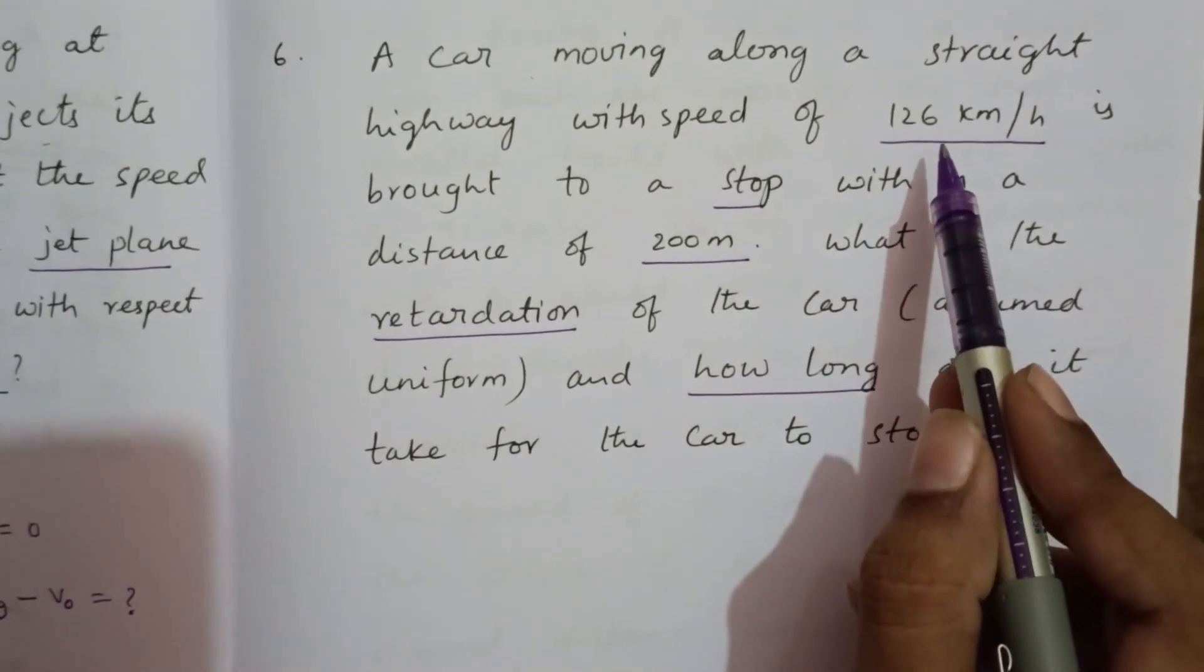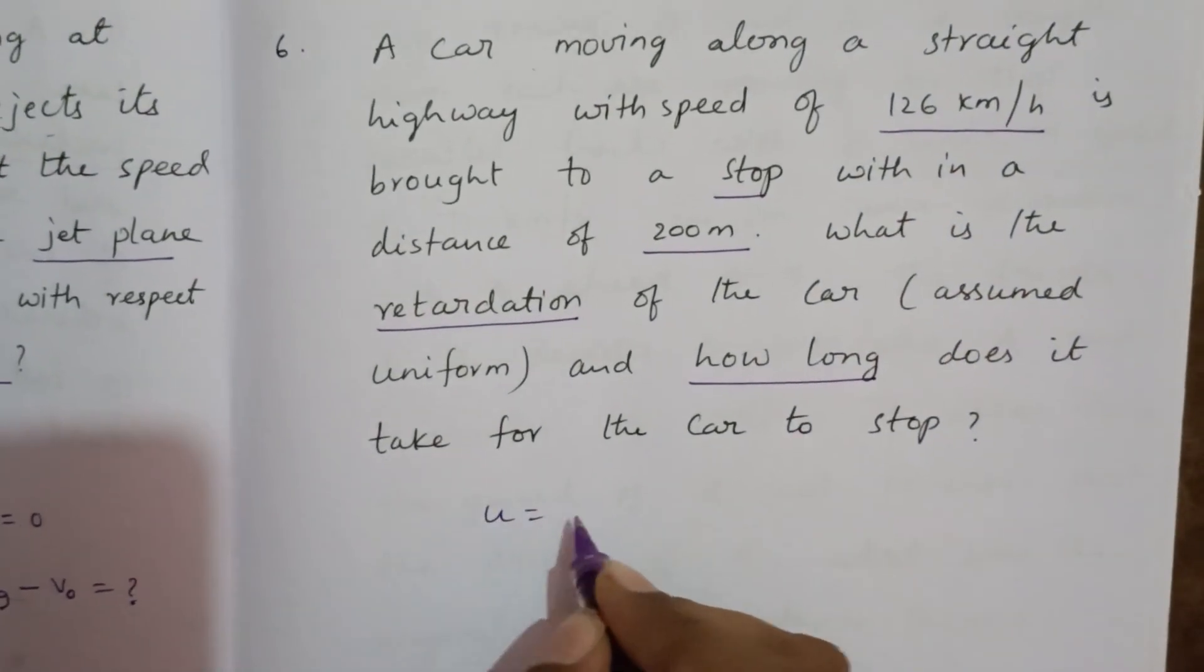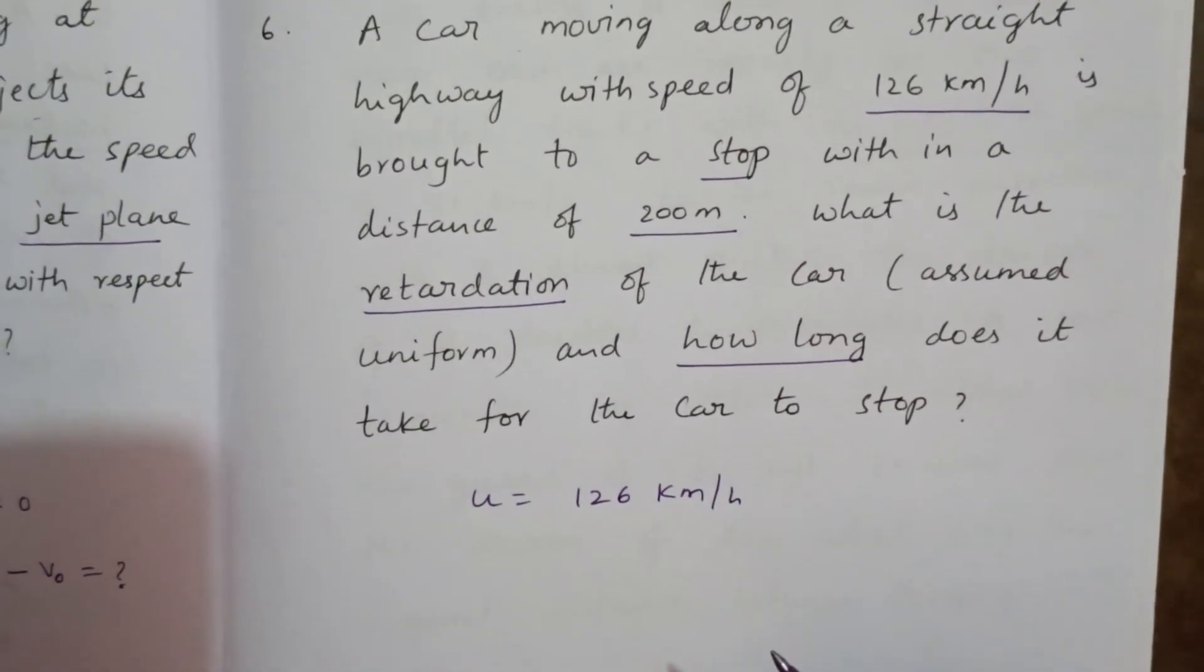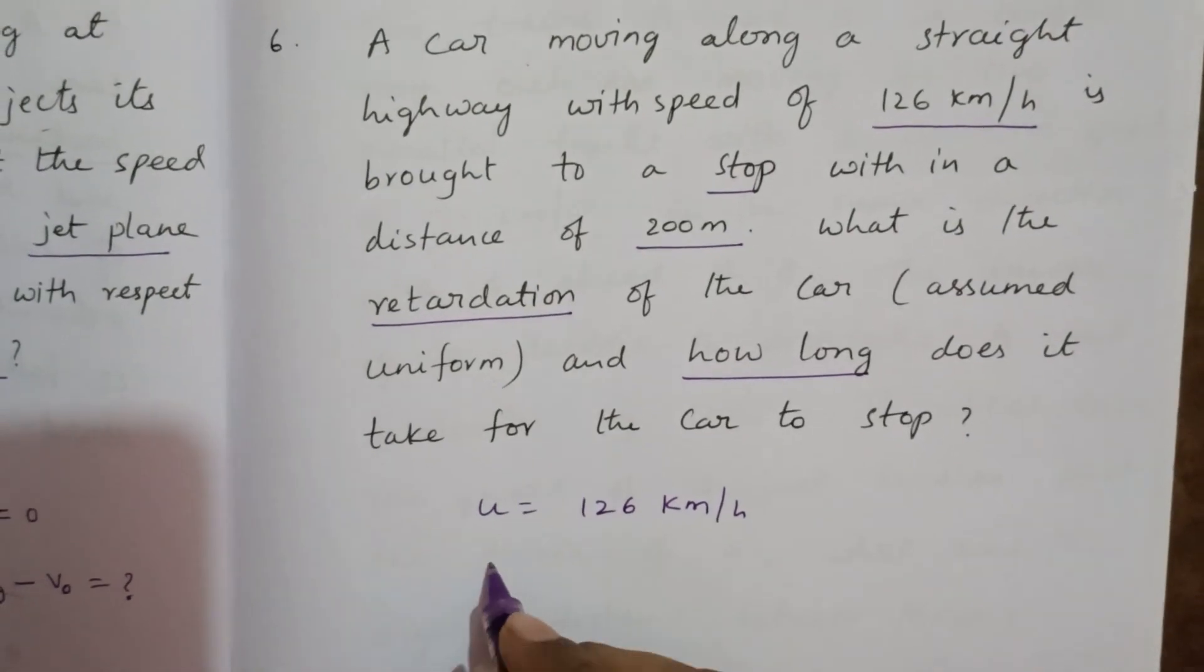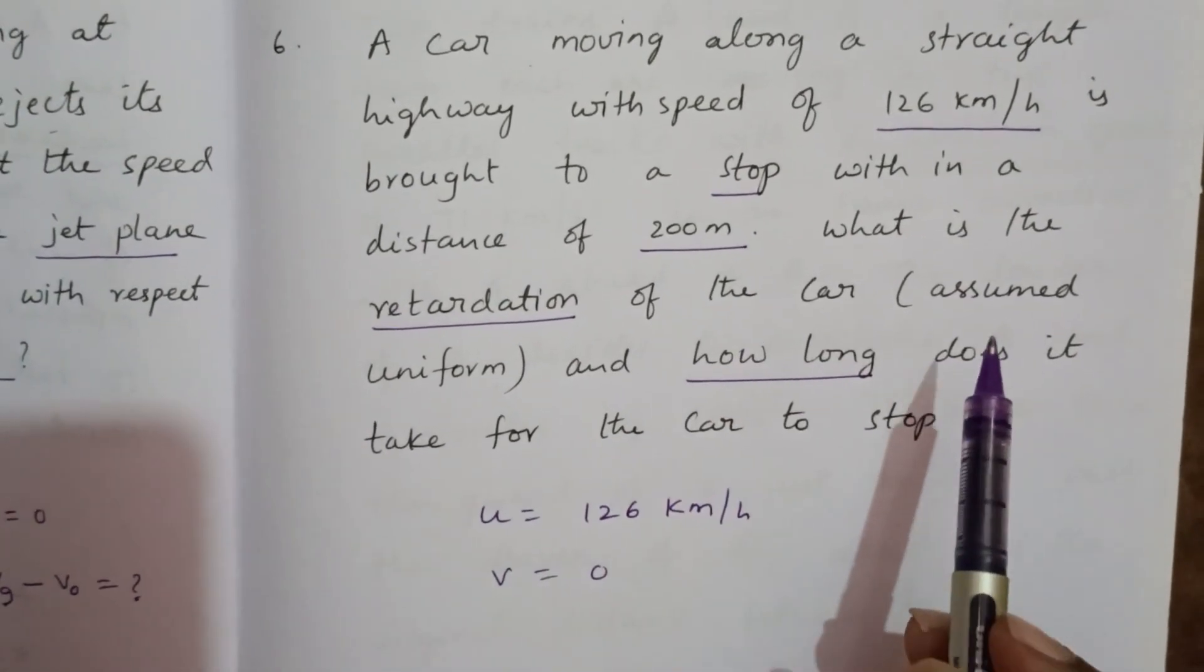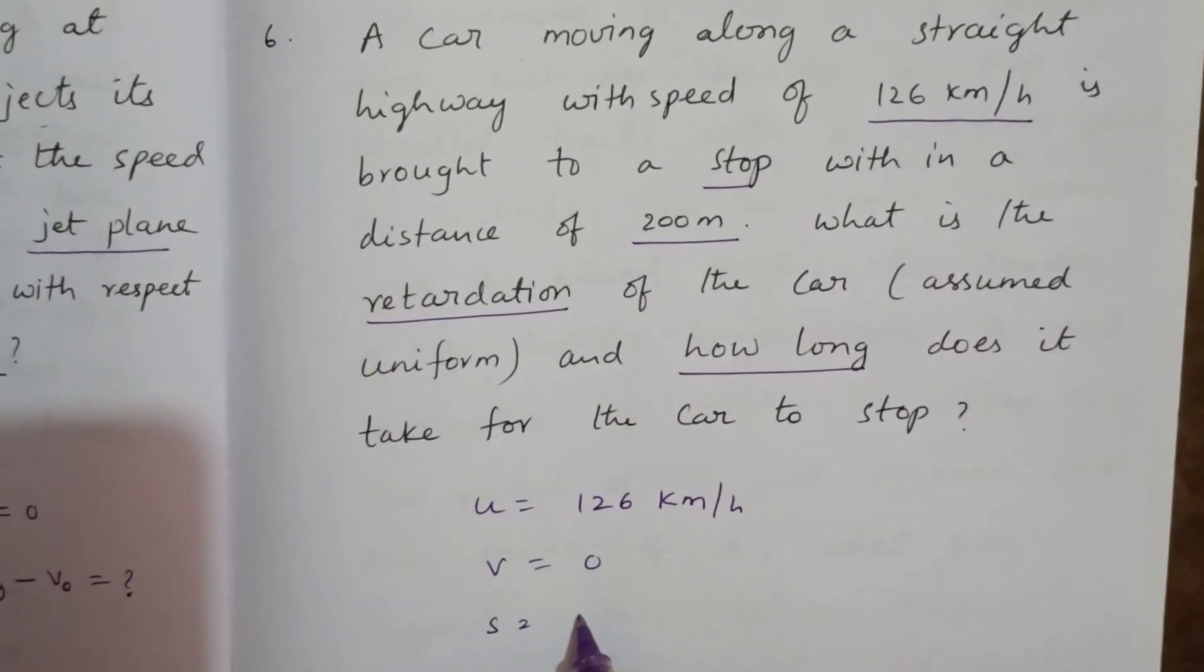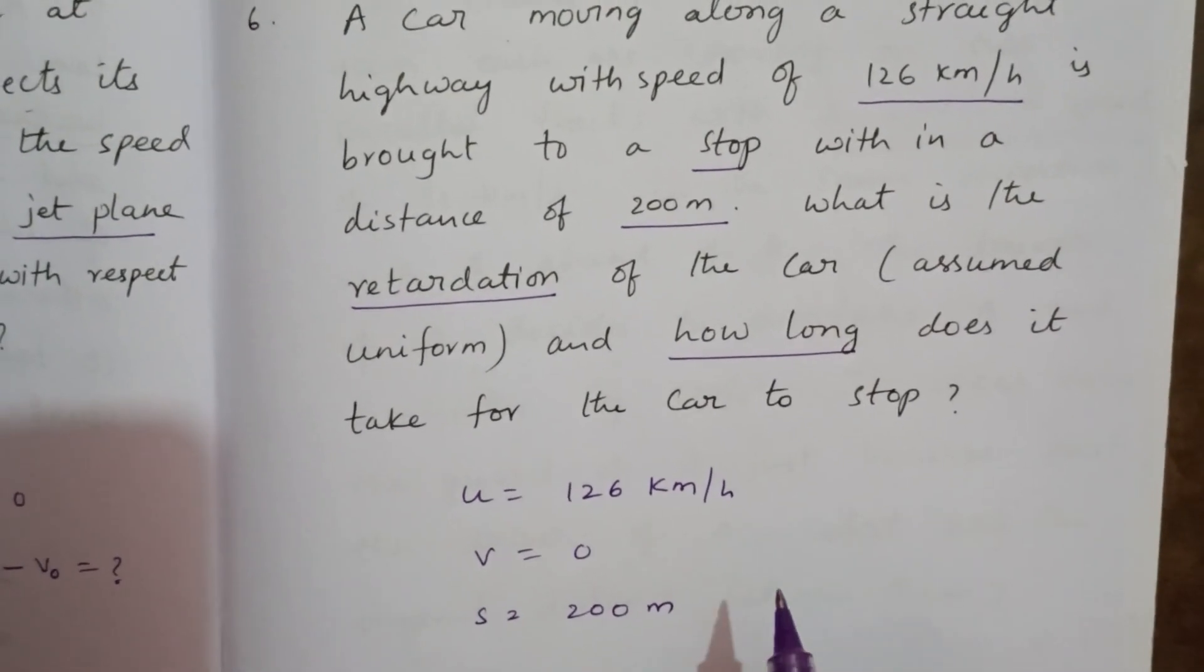Initially it is traveling with 126 km per hour, so initial velocity u equal to 126 km per hour. Now brakes are applied, so final velocity v becomes 0. Finally it comes to rest. Distance traveled is s equal to 200 meters.